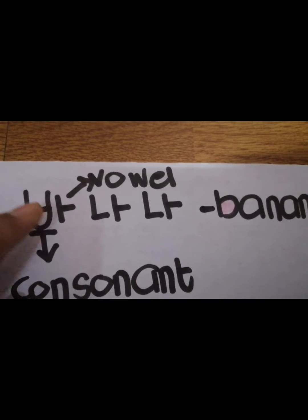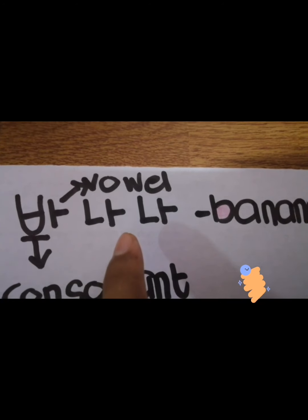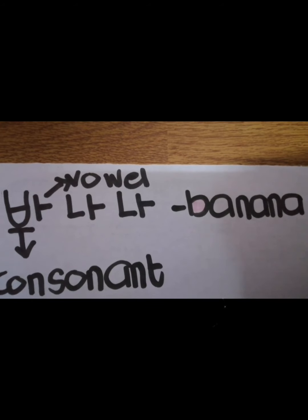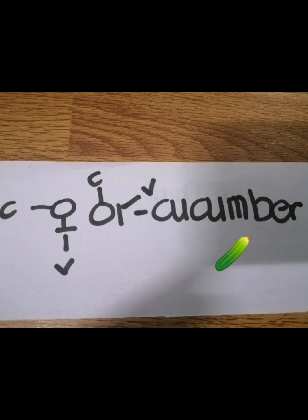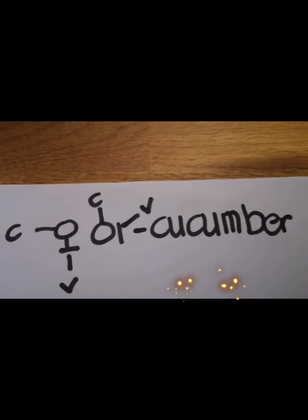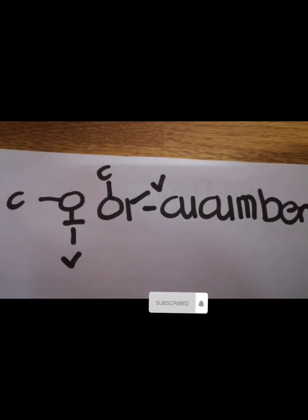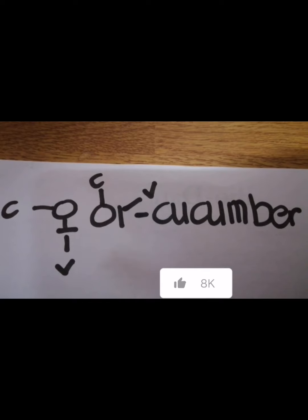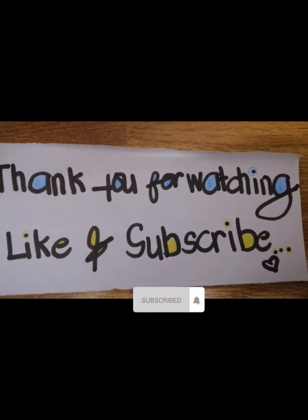Most words consist of a consonant and a vowel. For example, banana: letter B and A make 바, letter N and A make 나 — each syllable is consonant plus vowel. So banana in Korean is made up of consonant-vowel pairs in every syllable.